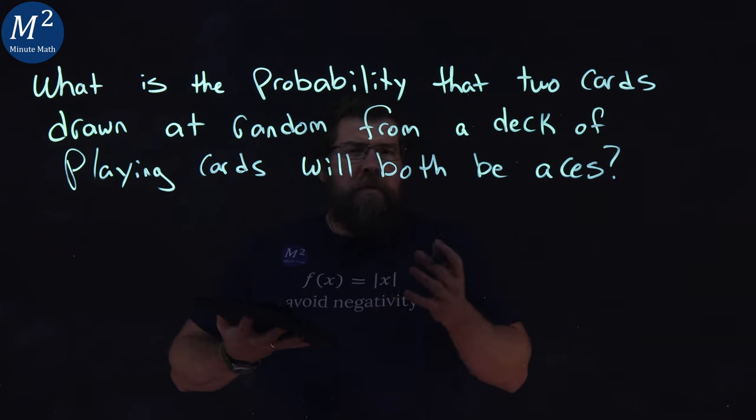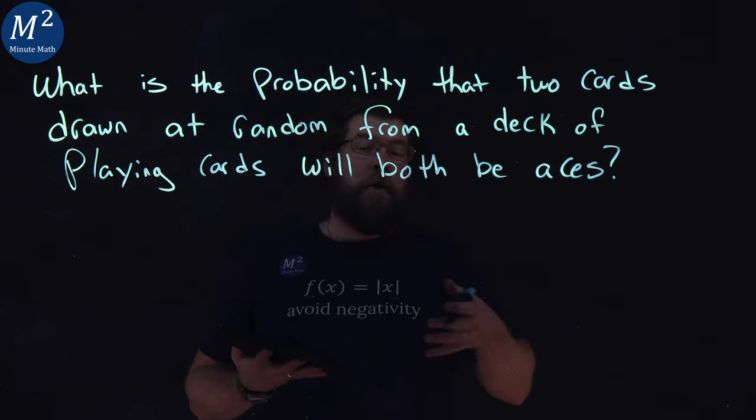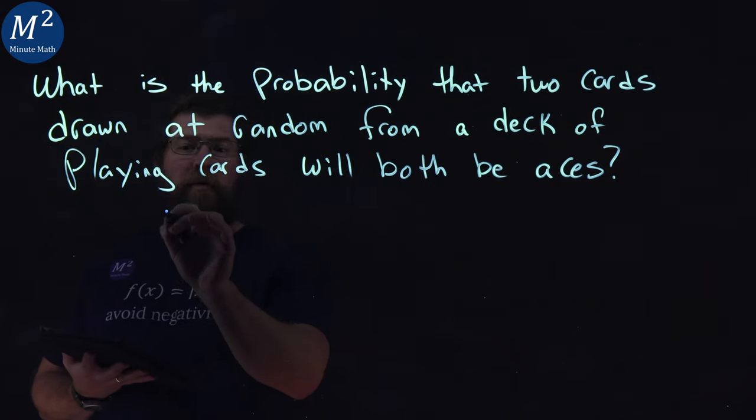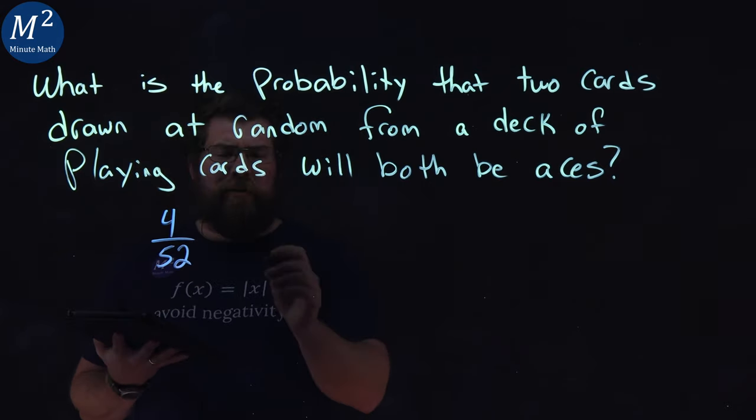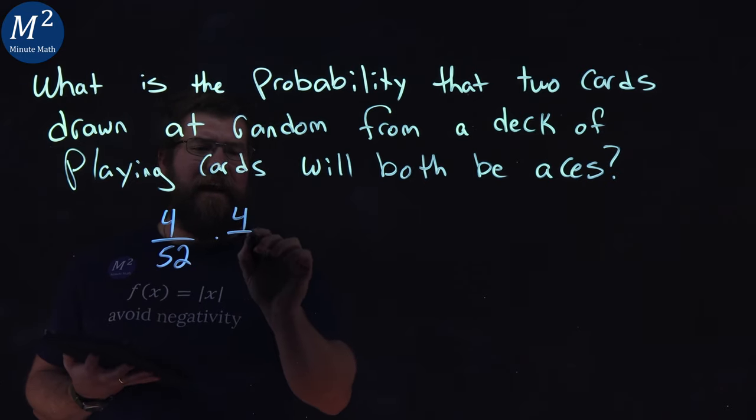At first, we would think, how many aces are in a deck? And we'd say there's four aces in a deck out of 52. And then we can just multiply that, there's four aces again, out of 52.